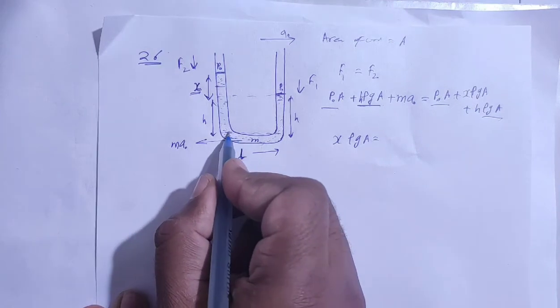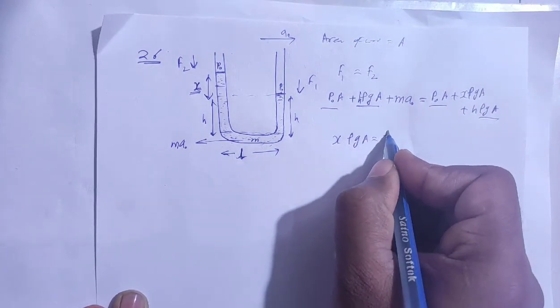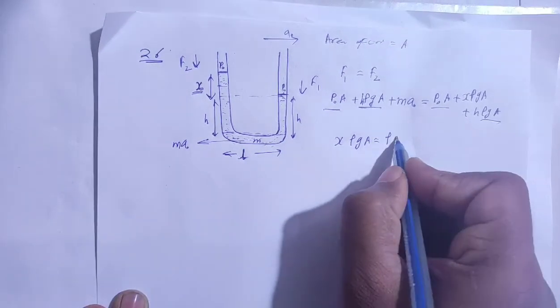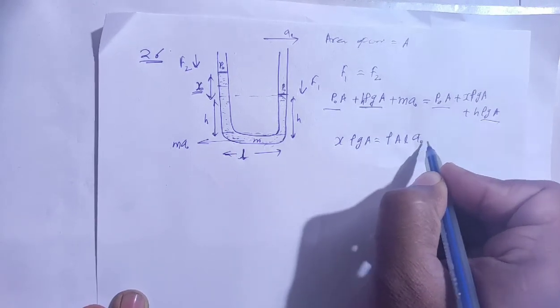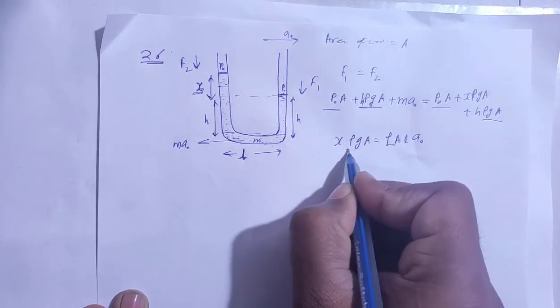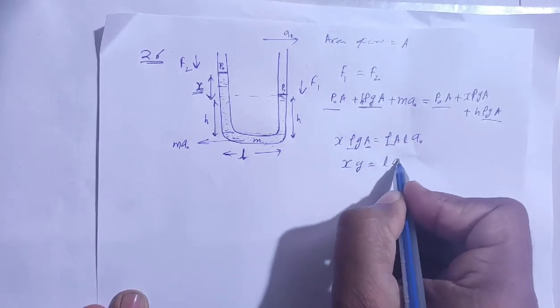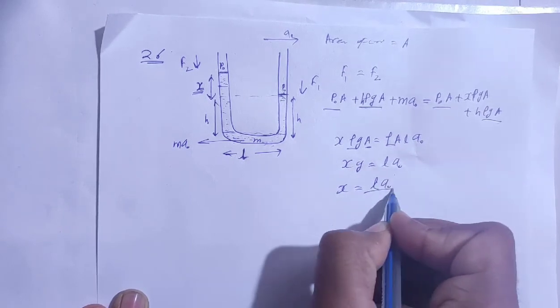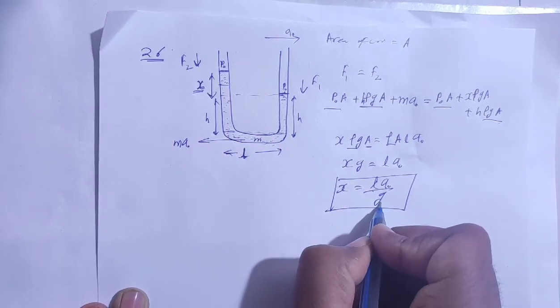Volume is area into length, so density A into L times A naught. You can cancel out A. x g is equal to L A naught, so x is equal to L A naught upon g. The height difference x is equal to L A naught upon g.